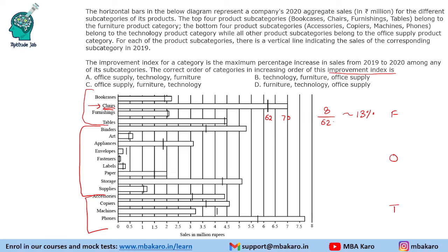So the furniture category has an improvement index of about 13%. For the office supply category, appliances shows a quite significant increase — from about 18 or 19 up to 31. That's an increase of 12 by 19, which is more than 60%. So roughly 63% for the office supply category.